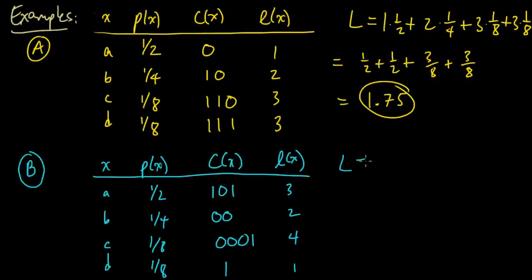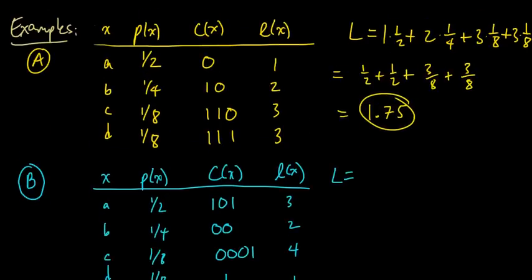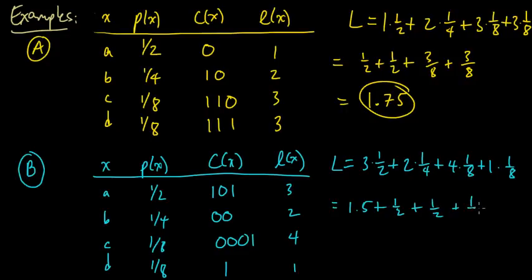And what is our expected length? Well, let's just plug in the formula again. So we have the sum over all the x's, sum over a, b, c, and d of length times probability. So what do we have? We have three times one half plus two times a quarter plus four times one eighth plus one times one eighth. So what's this? This is 1.5 plus one half plus one eighth. So we get 2.625 because one eighth is 0.125.